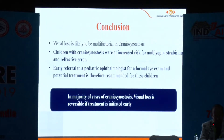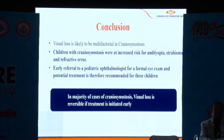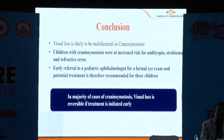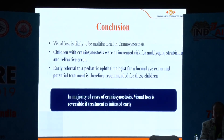In conclusion, visual loss is likely to be multifactorial. Children in this category are at increased risk for amblyopia, strabismus, and refractive errors. In the majority of cases, the visual loss is reversible if treatment is initiated early. Though they present phenotypically different, they have the right to good vision. Early referral to a pediatric ophthalmologist for a formal eye examination and potential treatment is therefore recommended.